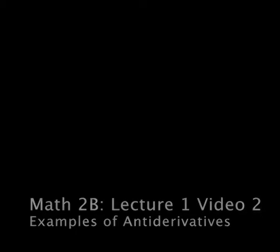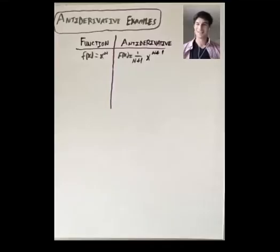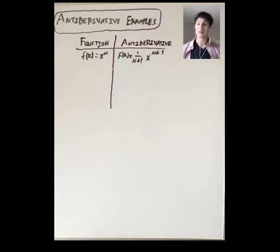In this video, we'll continue our discussion of antiderivatives, and we have two goals. First, we're going to give a bunch of examples of functions where we can write down an antiderivative of that function, given what we know about derivatives. Then we'll talk about this issue of why we defined an antiderivative of a function instead of the antiderivative of a function.